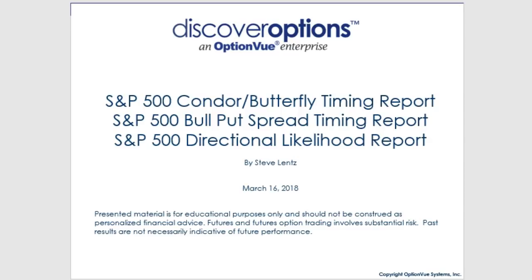These three different market timing reports for advanced options traders include one for butterfly and condor traders, bull put spread traders, as well as those just wanting a statistical look at where the market is likely to go.